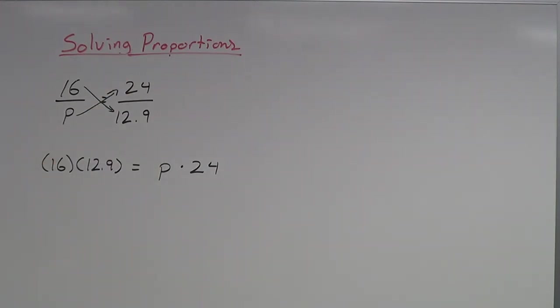This looks like a pretty simple equation for us to solve. We just have to figure out what 16 times 12.9 is, plug that into your calculator, and you get 206.4 is equal to 24p. I'm going to put the 24 in front of the p because that's usually how we write variables times numbers.